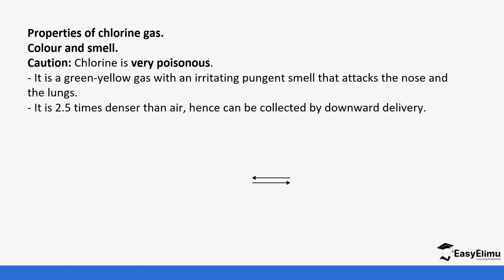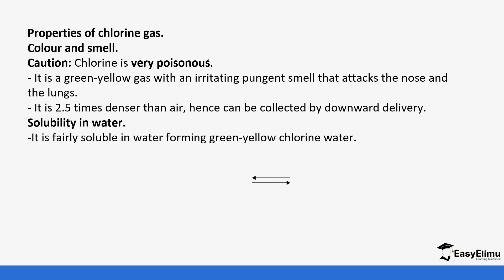Chlorine is 2.5 times denser than air, which is the reason why it's collected by downward delivery or upward displacement of air. It's very soluble in water, forming a green-yellow chlorine water.